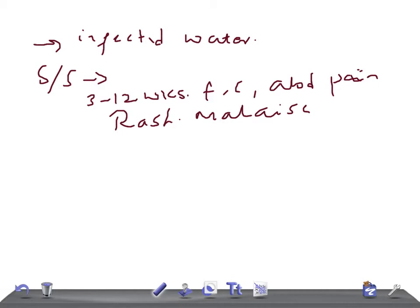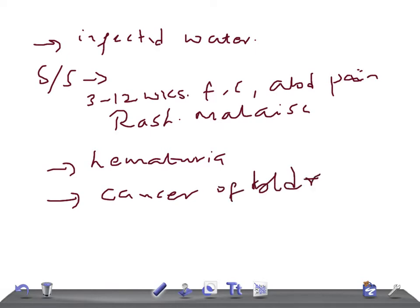If it's bladder involvement, the patient can have hematuria—passing of blood in urine. It can lead to cancer of the bladder and renal failure because of granulomas formed in the bladder, which can lead to kidney failure.